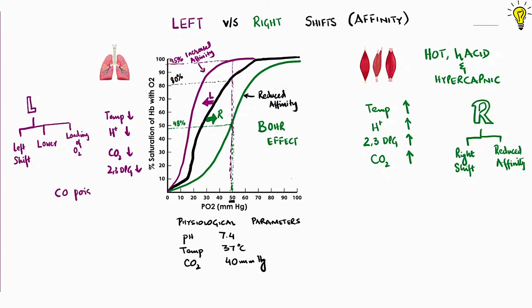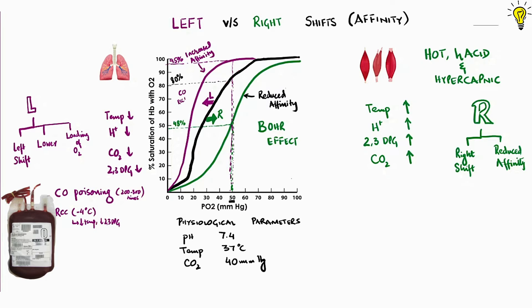Carbon monoxide poisoning can also cause the left shift in dissociation curve. Carbon monoxide itself binds 250 times more strongly to hemoglobin than oxygen. Where else does this phenomena occur? In packed RCCs stored at minus 4 degrees Celsius, which has low temperature and low 2-3 DPG. And the transfused hemoglobin therefore is left shifted. So it doesn't effectively unload the oxygen in tissues. It takes even 24 hours after the transfusion for the transfused red blood cells and hemoglobin for optimal performance.